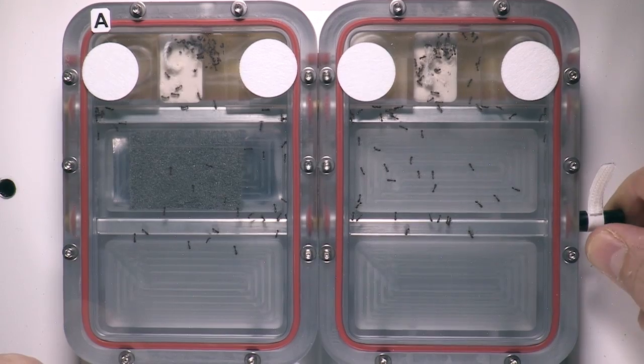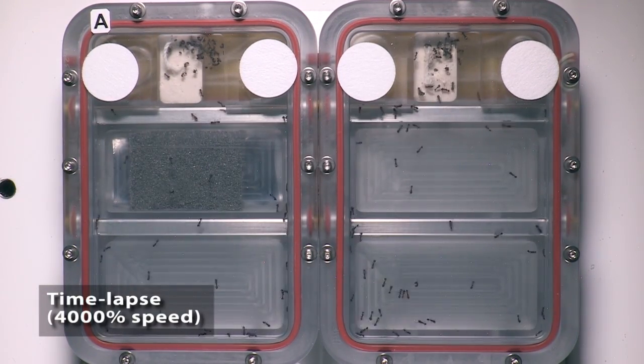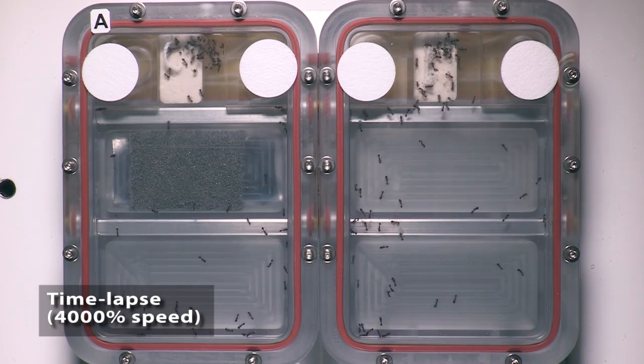than they will when we open up the second wall and give them a bigger area. And in this case, we would expect to see them walking in more straight lines. And so that's kind of the basics of the test setup.